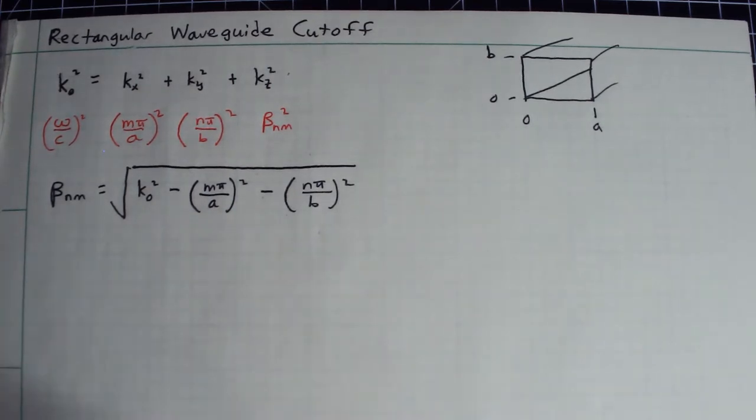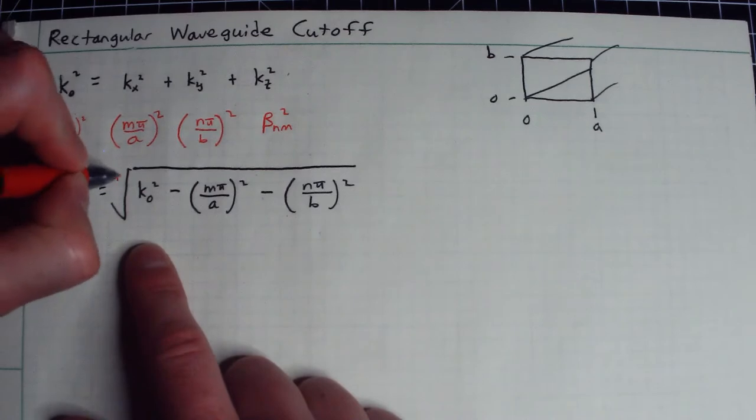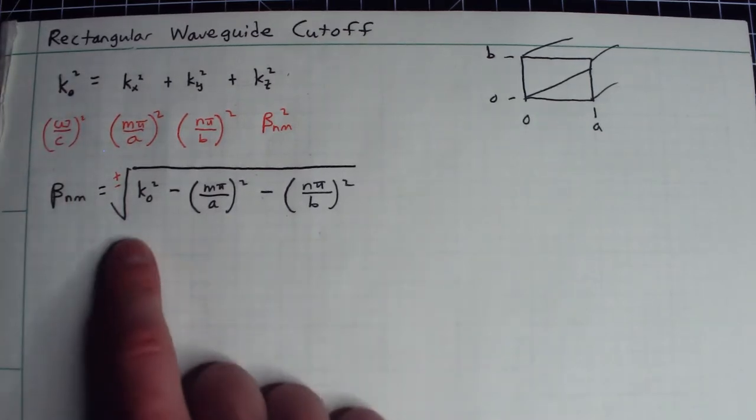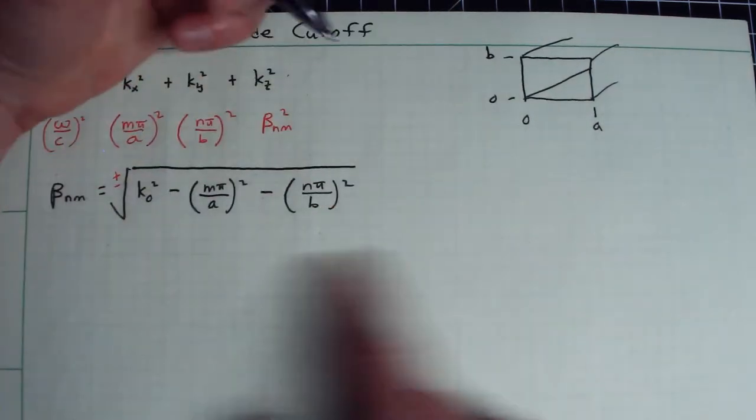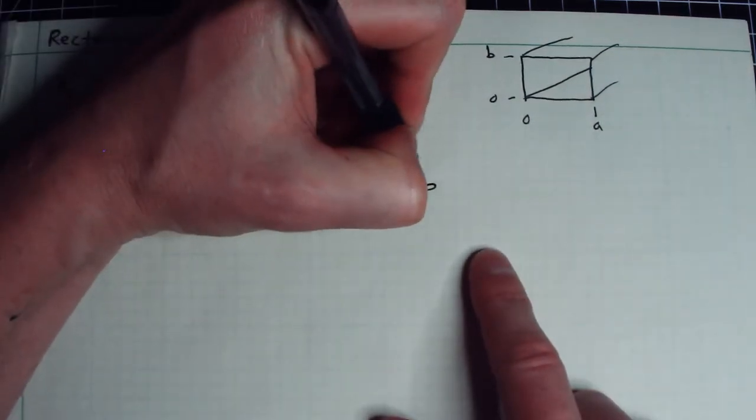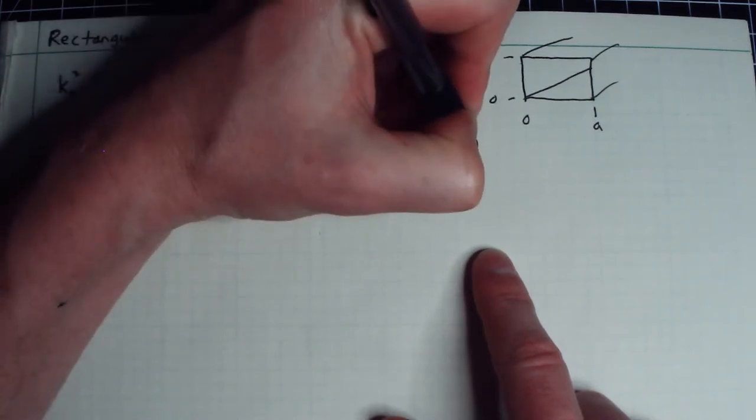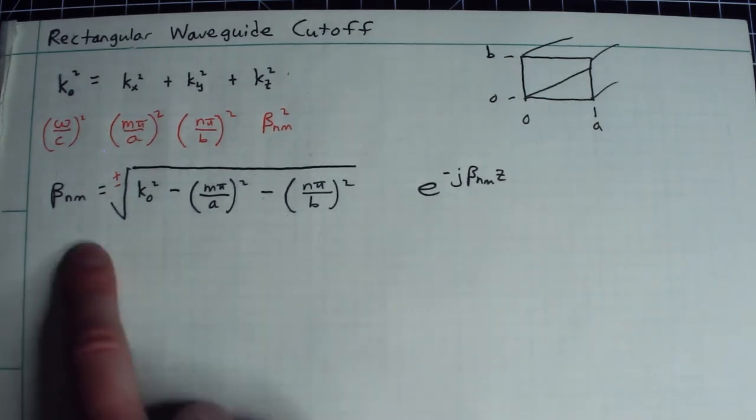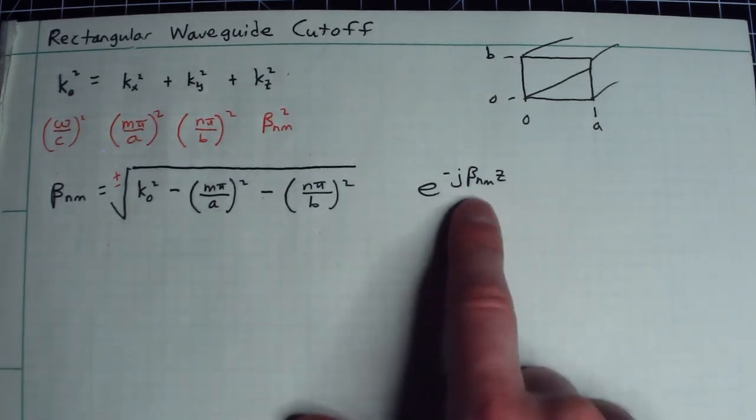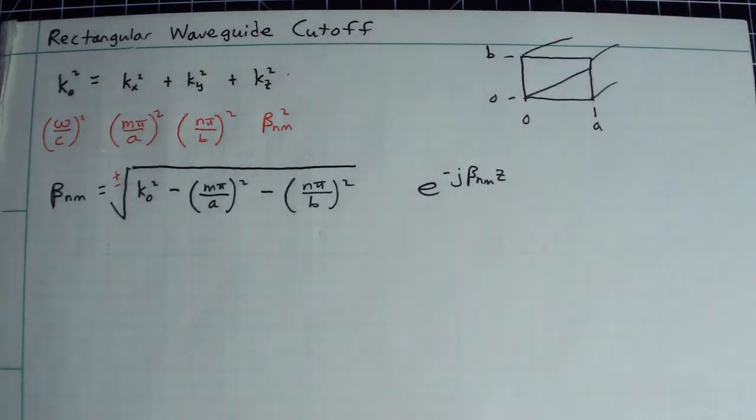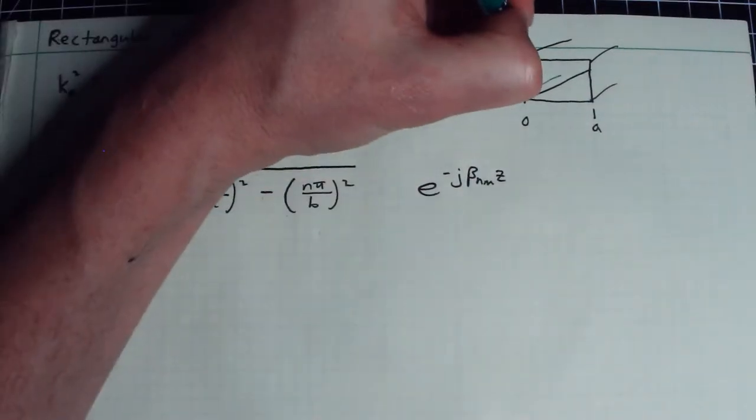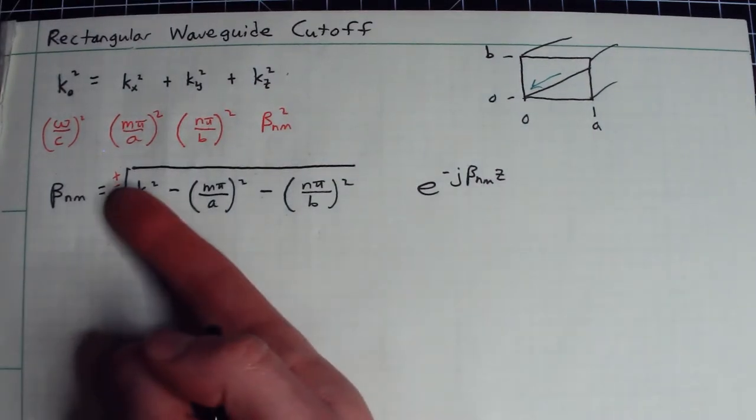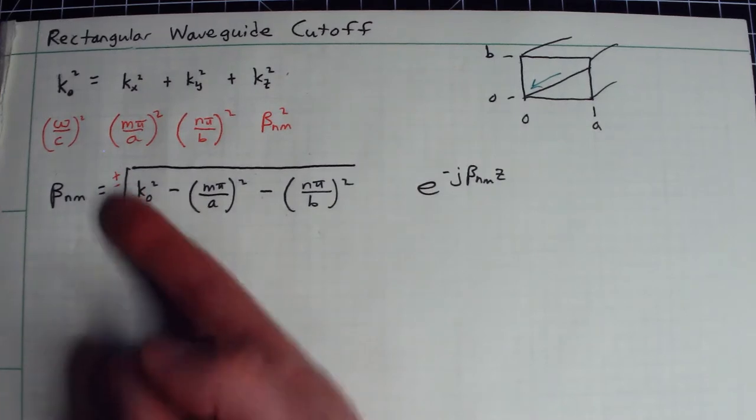Now, it's also important to remember that technically, this has both a positive and a negative solution to it. So what does that mean? Well, remember, our z dependence in our field profiles, we assumed, took on the form of this e to the j beta z. So if I pick out the positive root of this expression, what that would represent is a wave propagating down the positive z direction in the waveguide. However, hypothetically, there's no reason why I should single out the positive values.